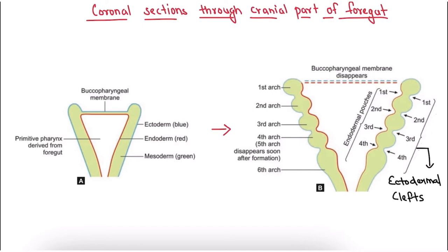Now coming to the coronal sections through the granular part of the foregut. In this image we can clearly see ectoderm, endoderm, and mesoderm. There is a buccopharyngeal membrane and primitive pharynx is derived from the foregut. This would develop into mesodermal thickenings as found in pharyngeal arches.